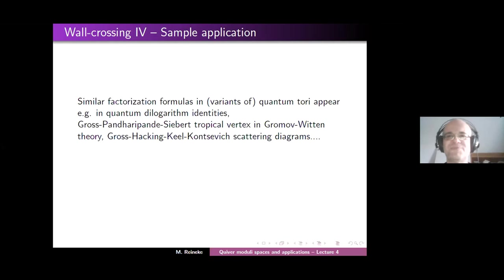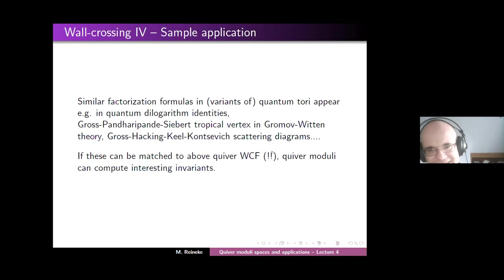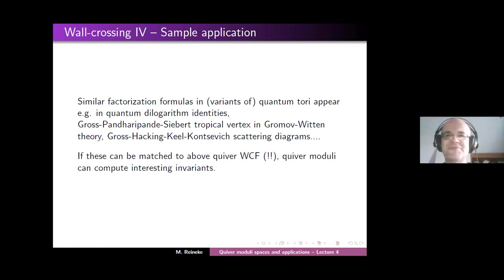The principle for finding great research projects is: if you can match such a factorization formula in a quantum torus to this quiver wall-crossing formula — and this matching is usually 90% of the research project — then quiver moduli spaces can compute interesting and very non-trivial invariants for you. So if you discover some strange factorization formula in a quantum torus, check whether it can be matched to the quiver wall-crossing formula, and then you can prove a non-trivial result.